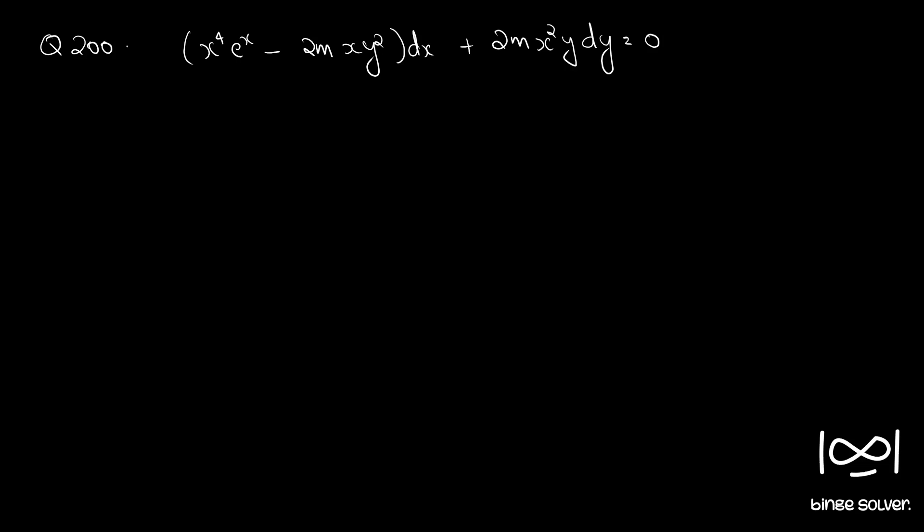Question number 200: x raised to 4 e raised to x minus 2m xy squared dx plus 2m x squared y dy equal to 0.